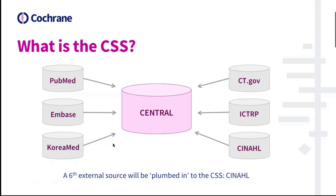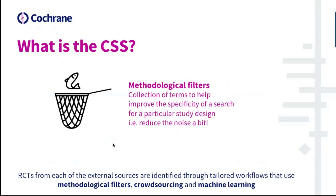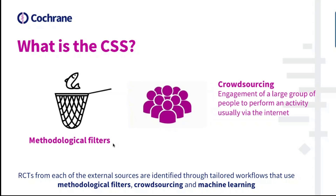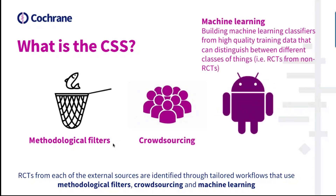We will be adding a sixth source soon, which will be EBSCO-CINAHL. RCTs from each of the external sources are identified through tailored workflows that use methodological filters, crowdsourcing and machine learning. Methodological filters are collections of terms — free text or controlled vocabulary — that get appended to a search strategy with the aim of reducing the number of hits retrieved. Crowdsourcing is the engagement of a large group of people to perform an activity, usually via the internet.